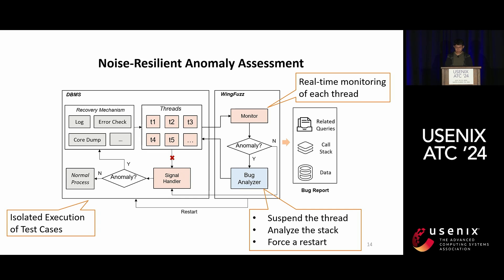WinFuzz addresses obstacle three by directly tracing each thread of the DBMS and dropping databases before executing each test case. To avoid system noise, when an exception signal is received from any thread, it is categorized as a DBMS anomaly. The monitor intercepts the signal and suspends the thread; the back-end analyzer then extracts the stack trace of that thread along with other data such as a shared bitmap. The analyzer then terminates the whole DBMS by bypassing its recovery mechanism, after which WinFuzz deletes all databases and restarts the DBMS. To avoid noise from previous executions, WinFuzz adopts a strategy of isolating the execution of individual test cases.